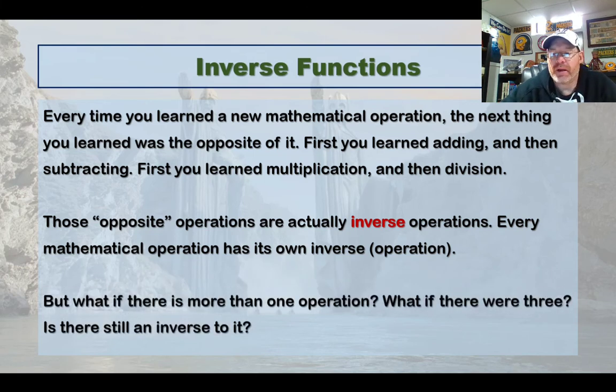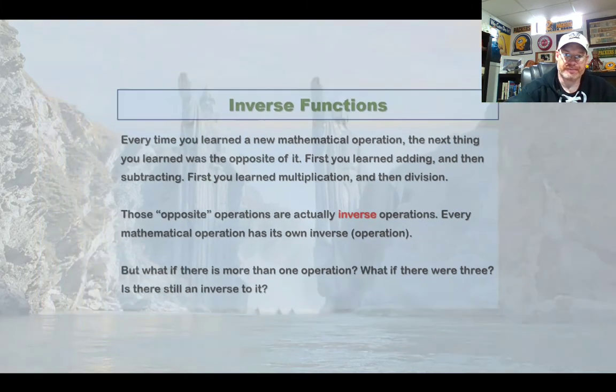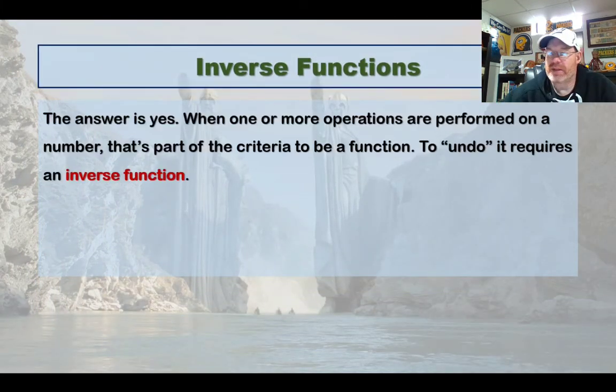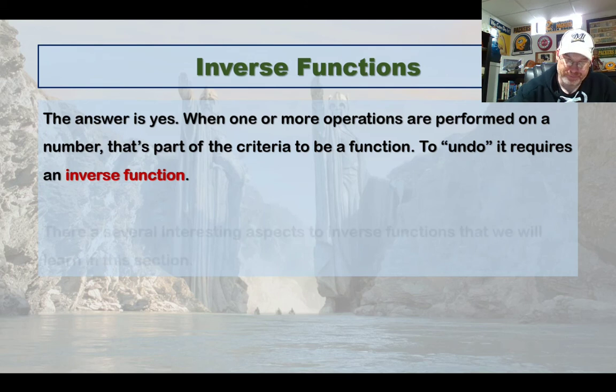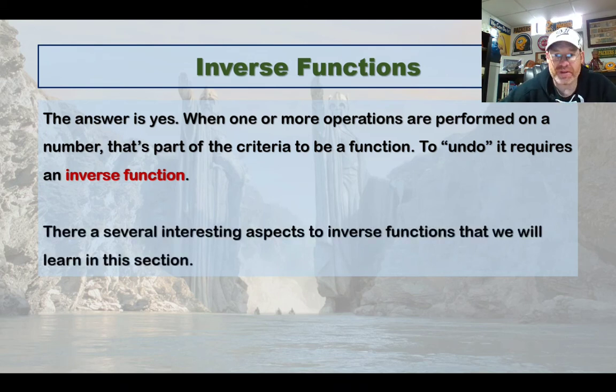However, what if a function has more than one operation to it? Suppose you have addition and multiplication, or if you have even more than that, is there still a way to find an inverse? And the answer to that is yes. When one or more operations are performed on a number, that's part of the criteria in order to be a function. And to undo that function requires an inverse function. There are several interesting aspects to inverse functions that we're going to learn in this particular section.